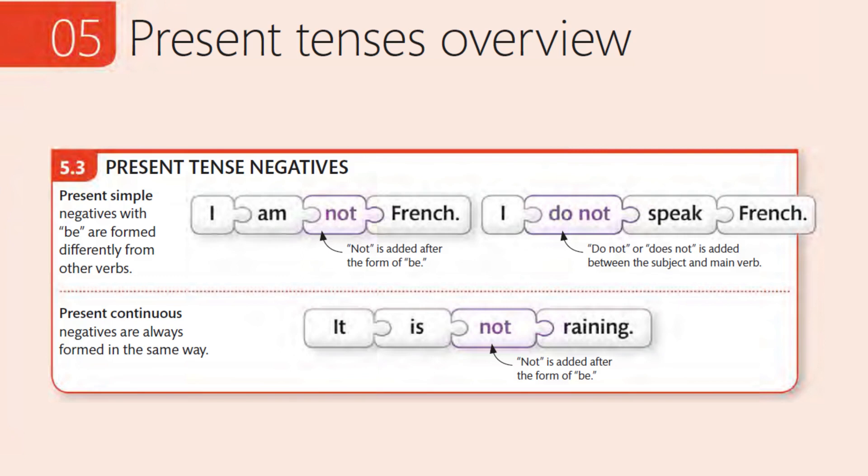Do not, or does not, is added between the subject and main verb. Present Continuous negatives are always formed in the same way. It is not raining. Not is added after the form of be.